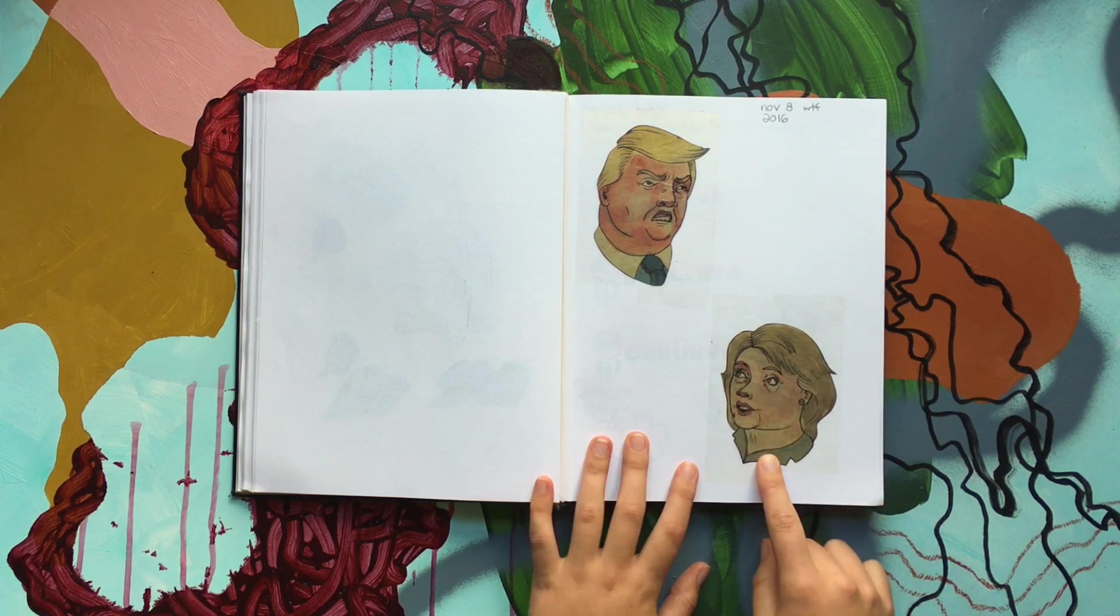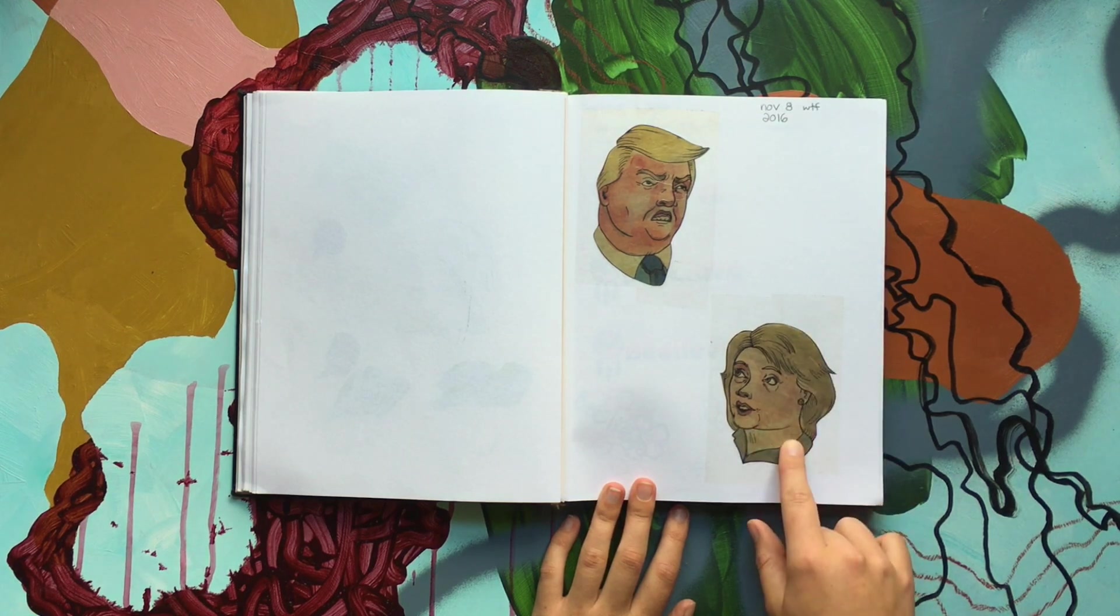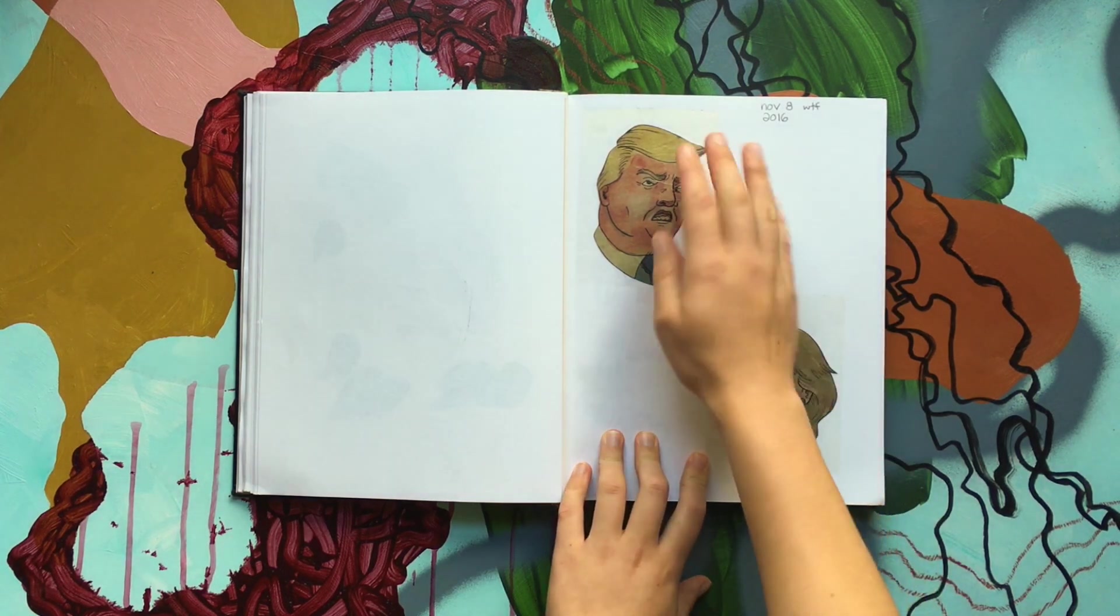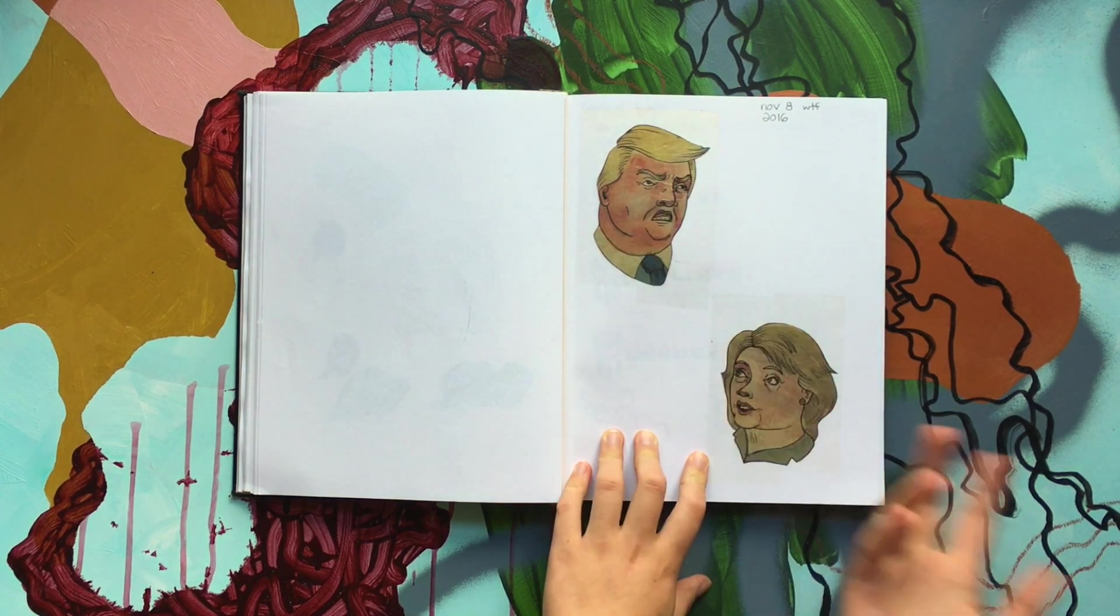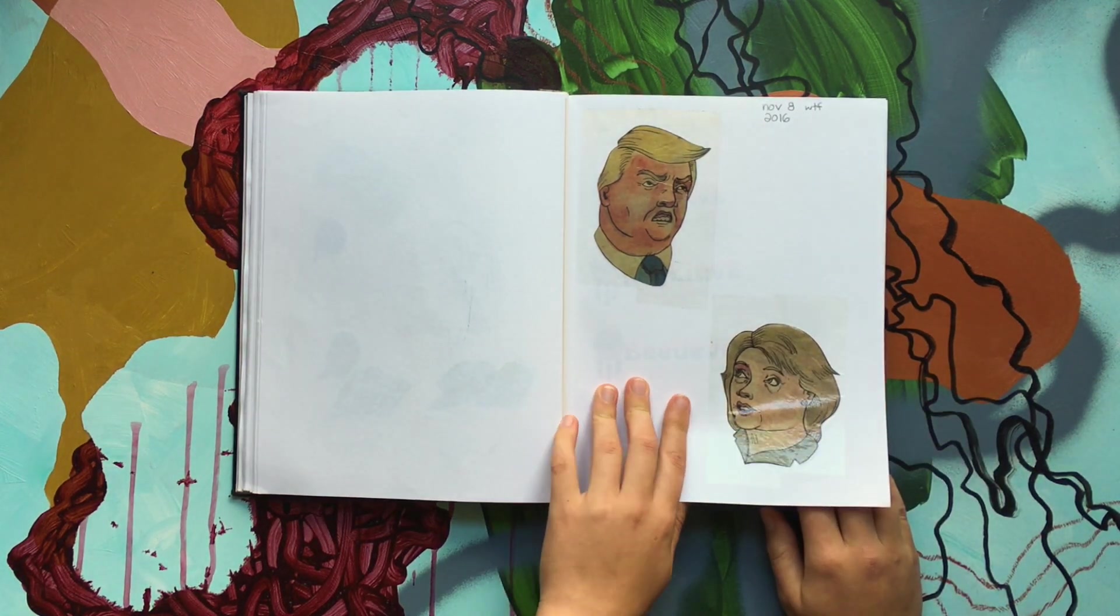These were cutouts from a newspaper. I'm not sure who actually originally drew them. But I put tape over them because I was going to draw something. And then I just never did. Probably because I was so upset that Trump won.